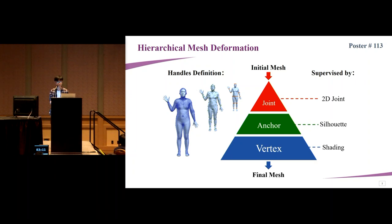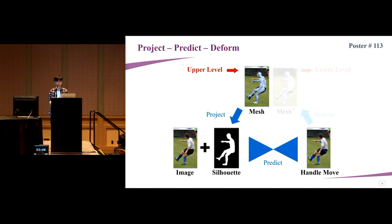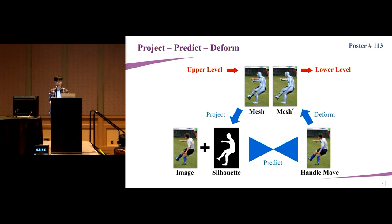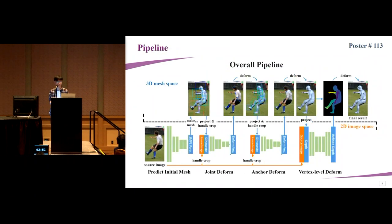The second novelty is a project-predict-deform strategy: we project the 3D mesh to 2D space, use neural networks to predict mesh deformation parameters (handle movements), then feed these back to the 3D mesh using the ARAP mesh editing method. In our overall pipeline, an initial simple model is estimated from the source image, and three subsequent stages serve as refinement phases that progressively deform the mesh to produce detailed human shape.